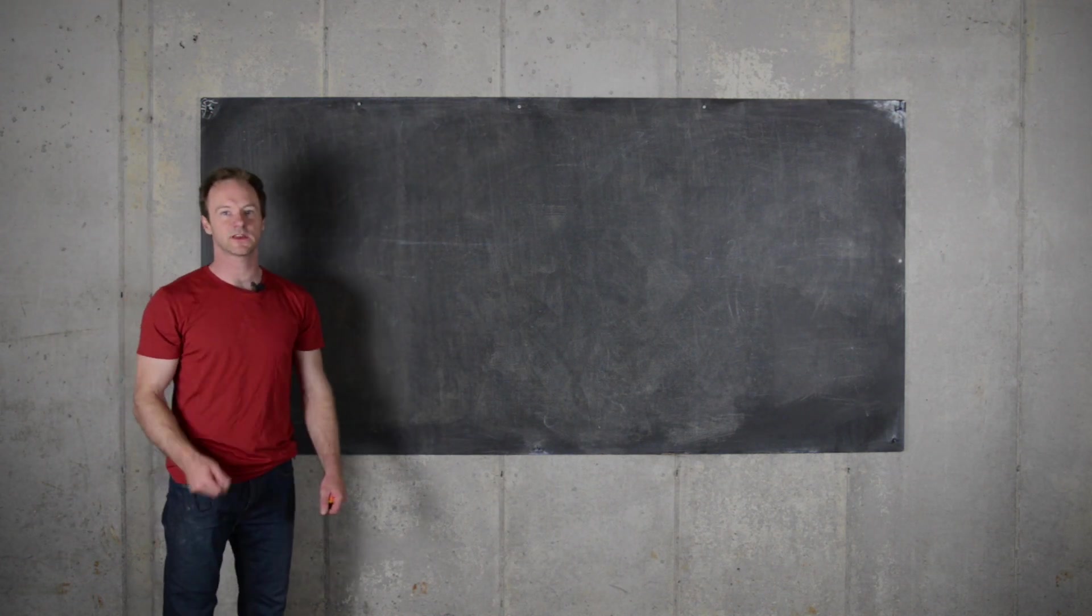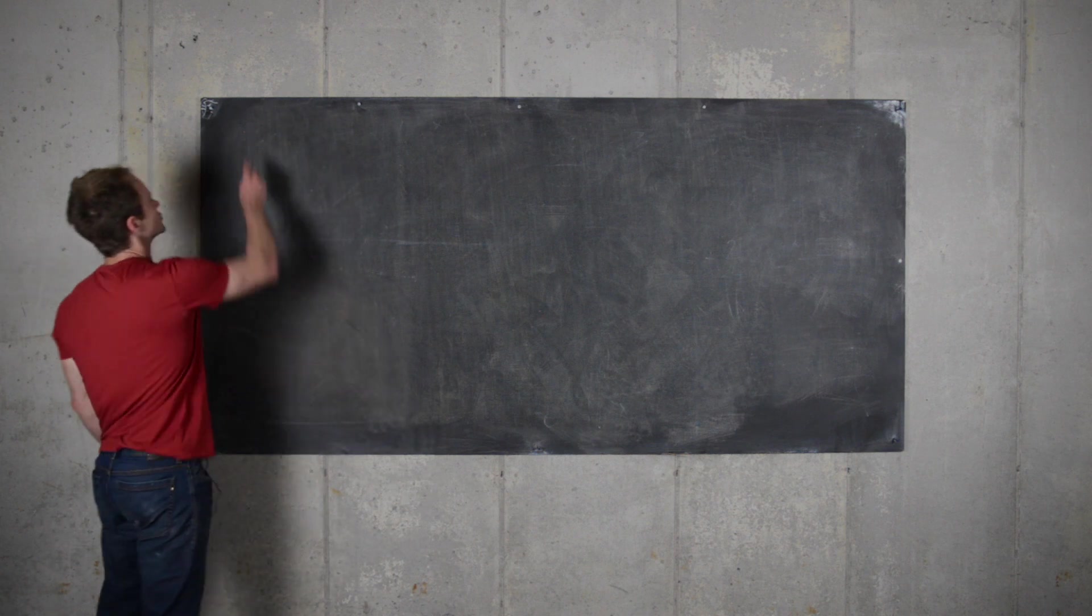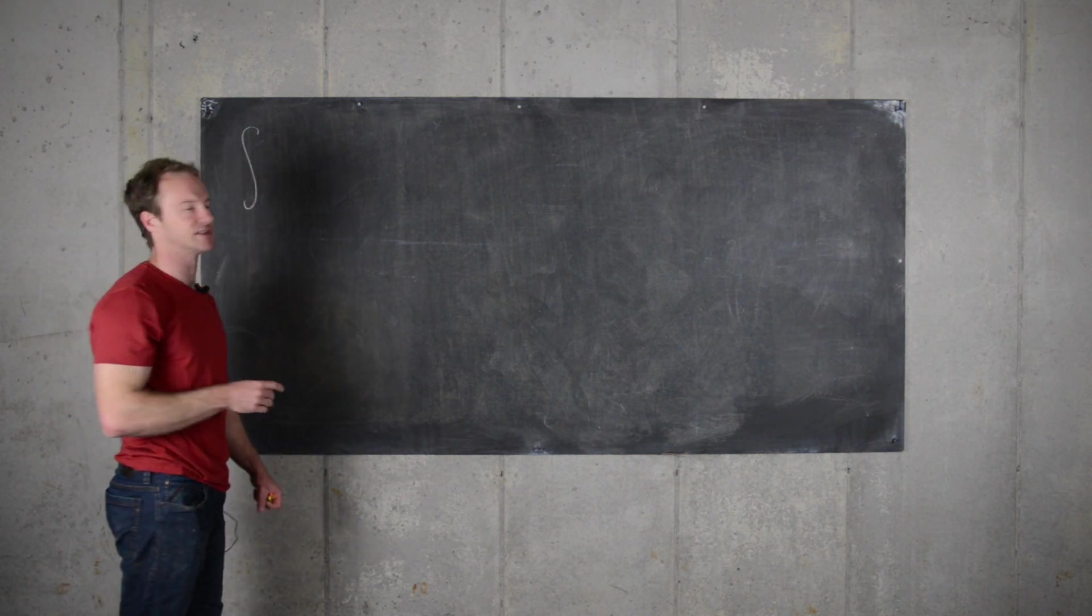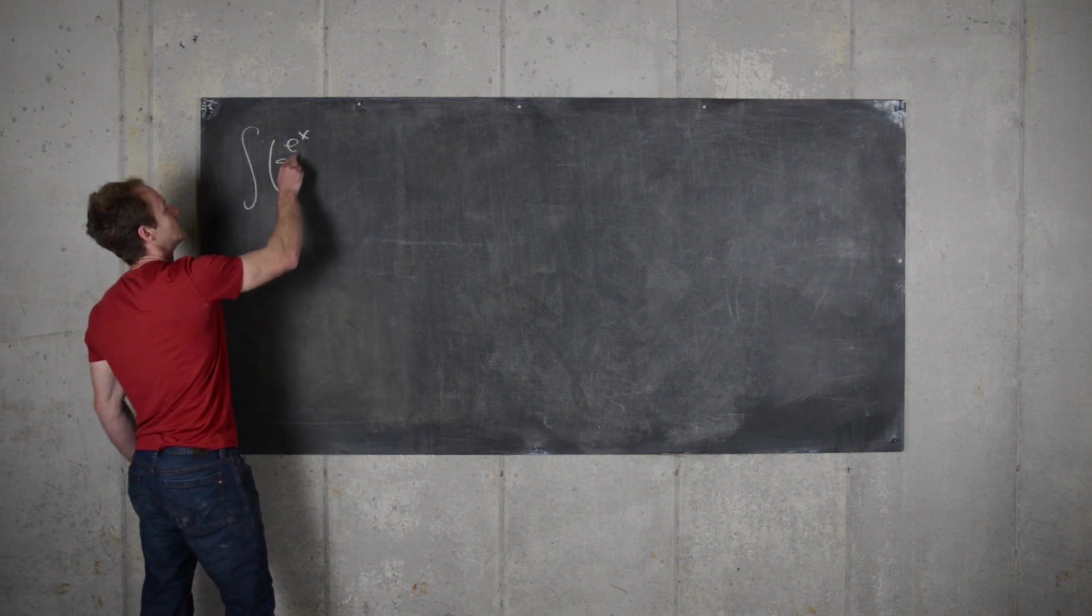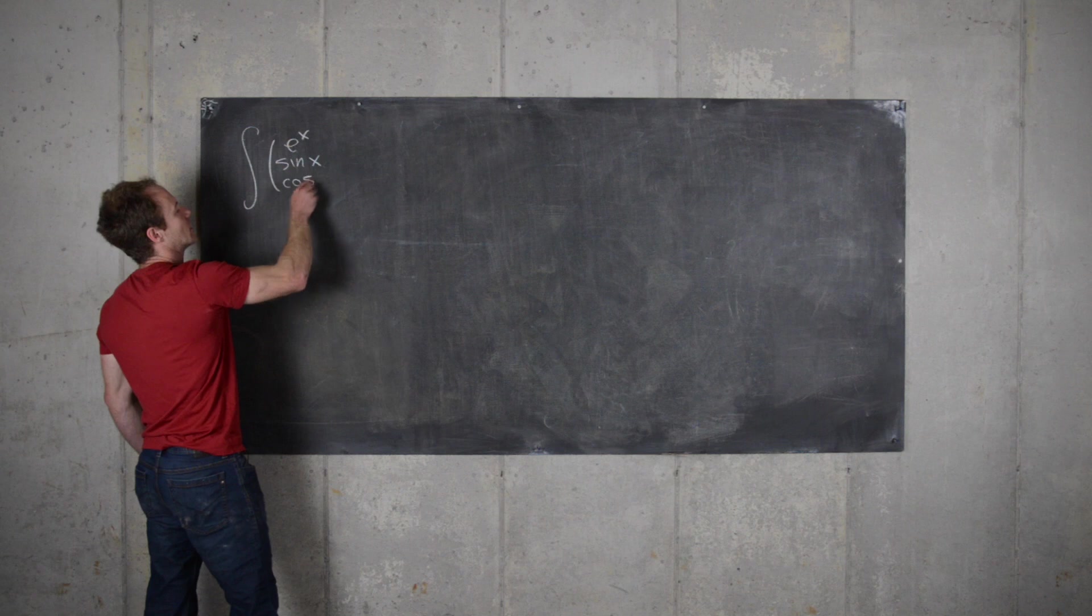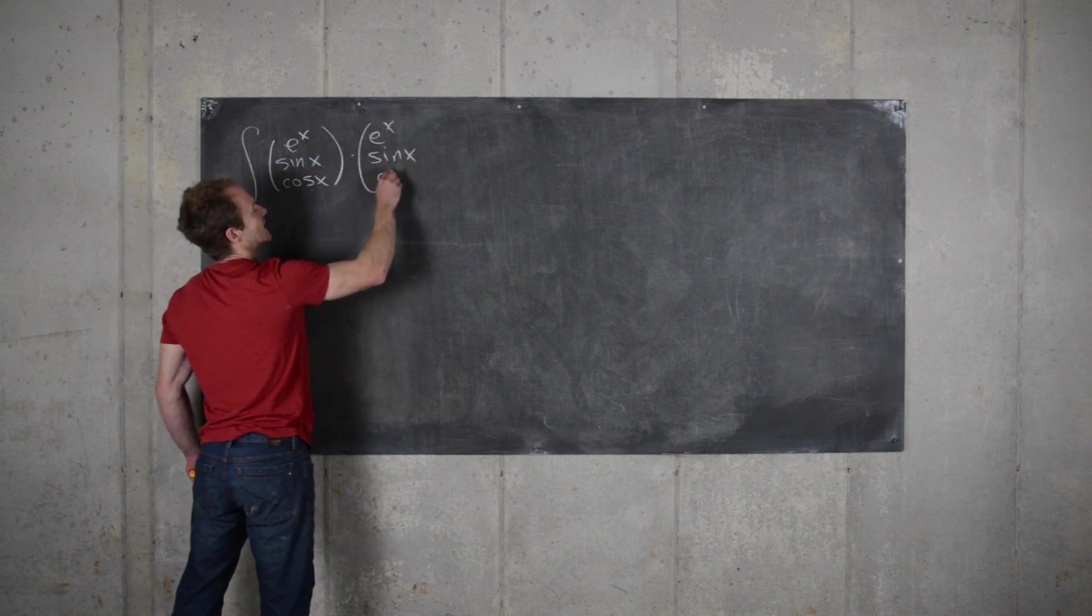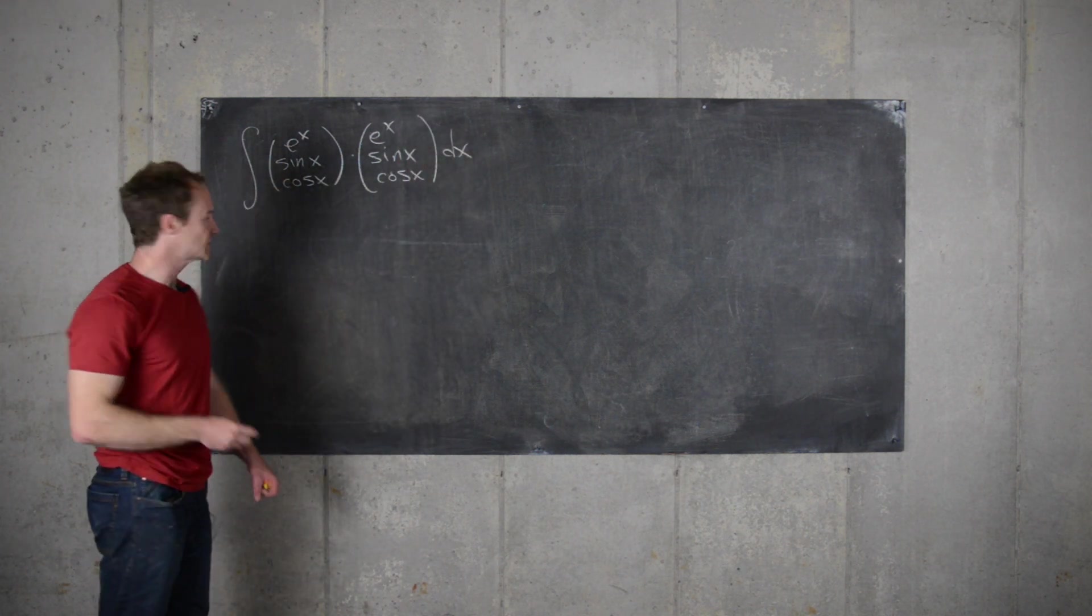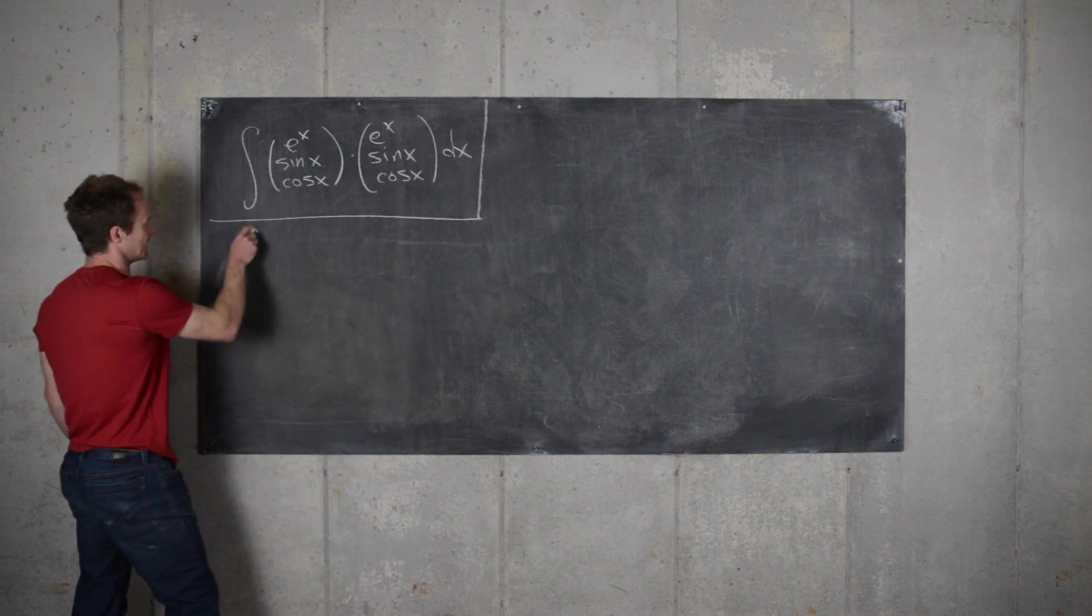Okay, so now we're going to look at something I like to call a type 2 integration by parts problem. And so these are generally of the form a transcendental function times a transcendental function. And they most often show up as an exponential, a sine or a cosine, times an exponential, a sine or a cosine, dx. So, let's look at one particular example of this.